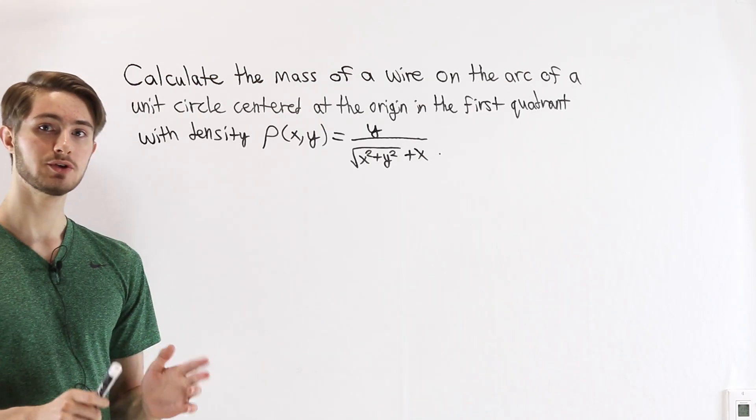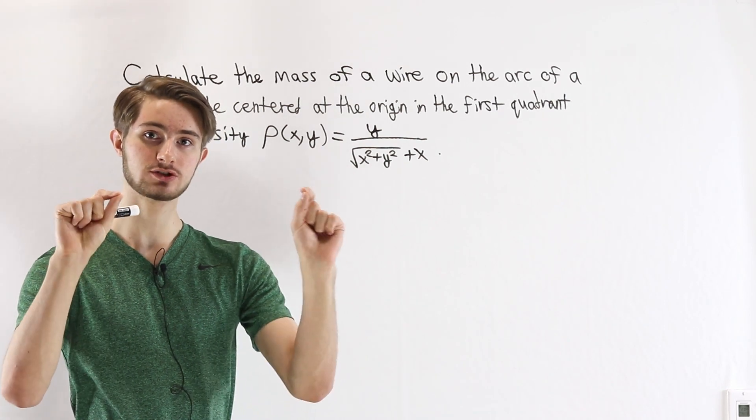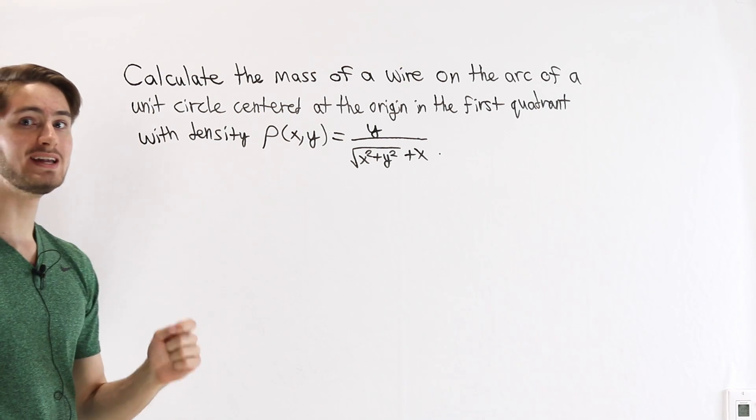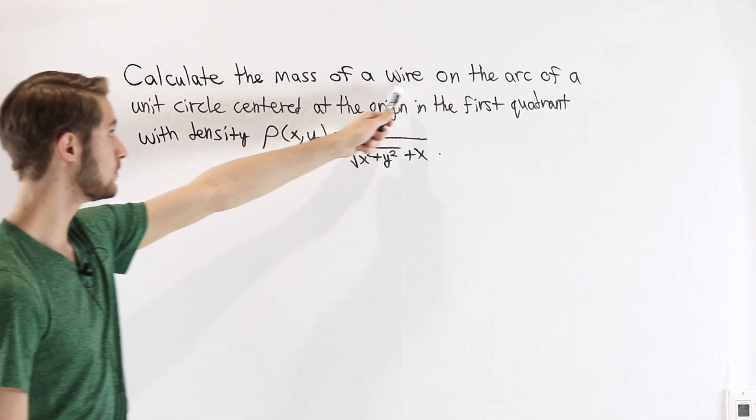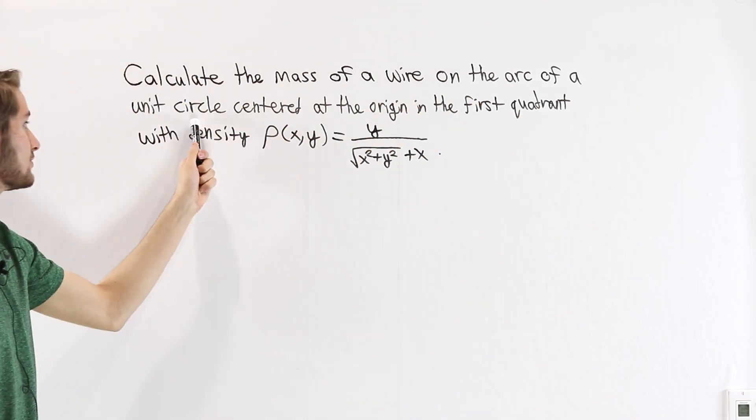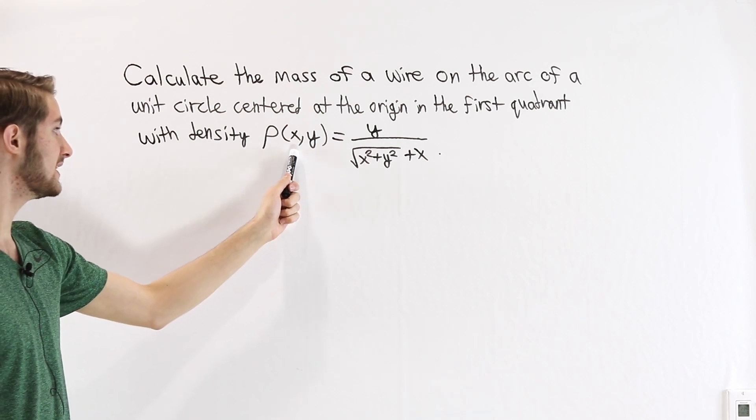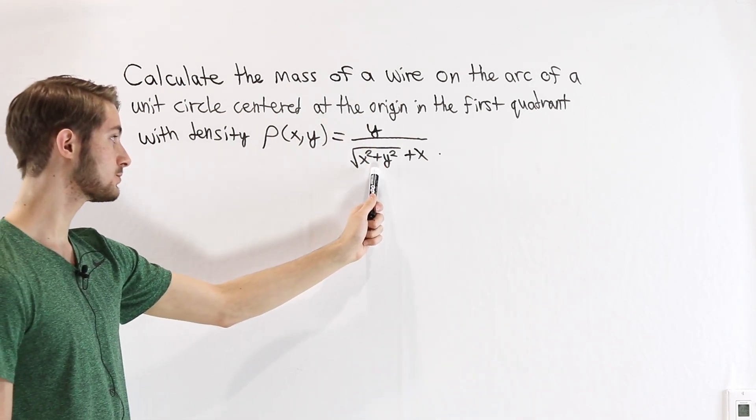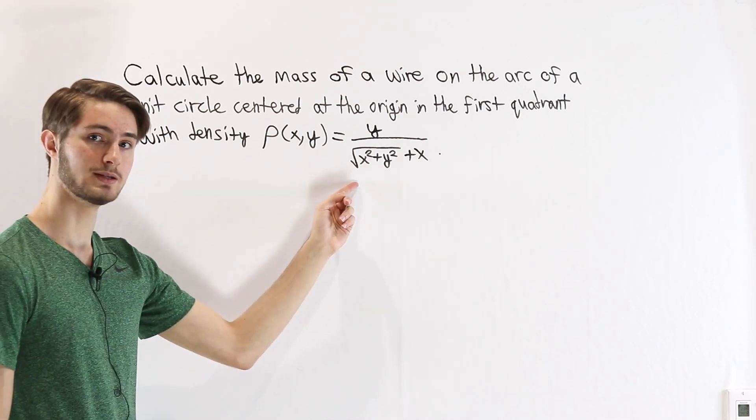So now we have a multidimensional case, and I'm going to tell you that I took that same straight wire that we just looked at, but this time, instead of leaving it straight, I bent that wire. So now we're going to calculate the mass of a wire on the arc of a unit circle centered at the origin, in the first quadrant, with density ρ(x,y) equals y over the square root of x² + y² + x. We need to calculate the mass.